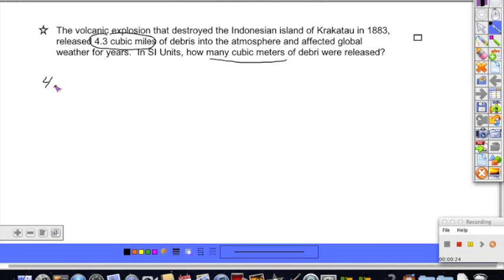They're giving us 4.3 cubic miles, which would be written as miles to the third power. How many cubic meters? So that's what we're trying to convert to.